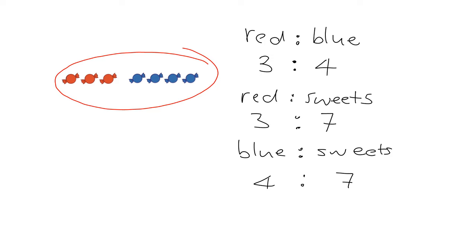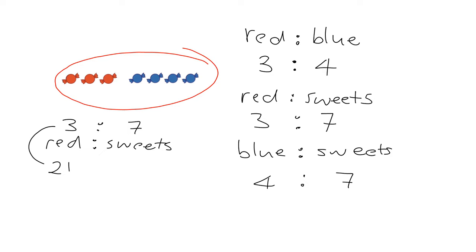Now they can ask all sorts of questions. For example, if I have 21 red sweets, how many sweets do I have in total? I know the ratio of red sweets to sweets in total is 3 to 7. I have 21 reds — that's times 7 — so I multiply 7 by 7 and get 49. All we have to do is choose the appropriate ratio to work from.